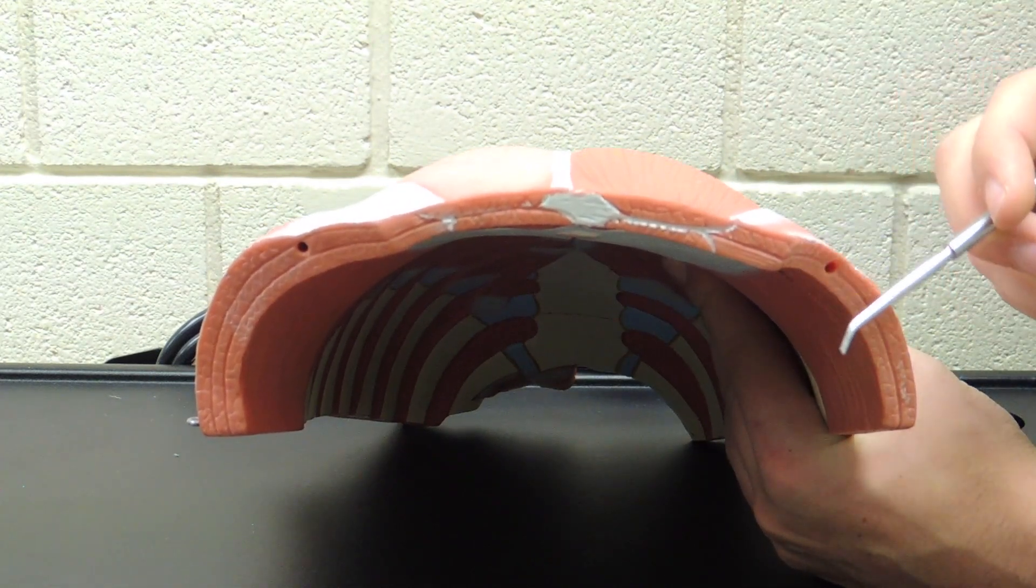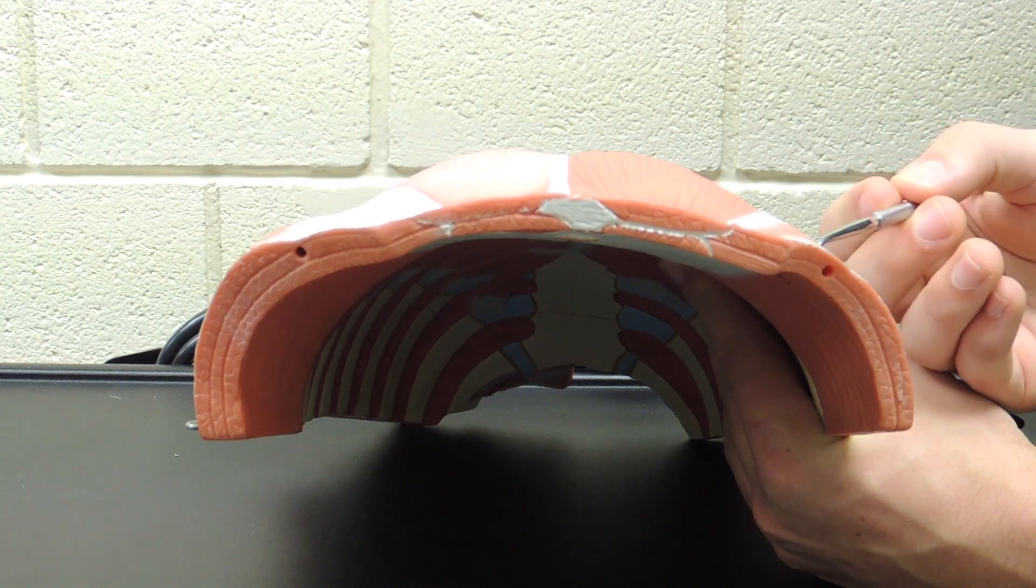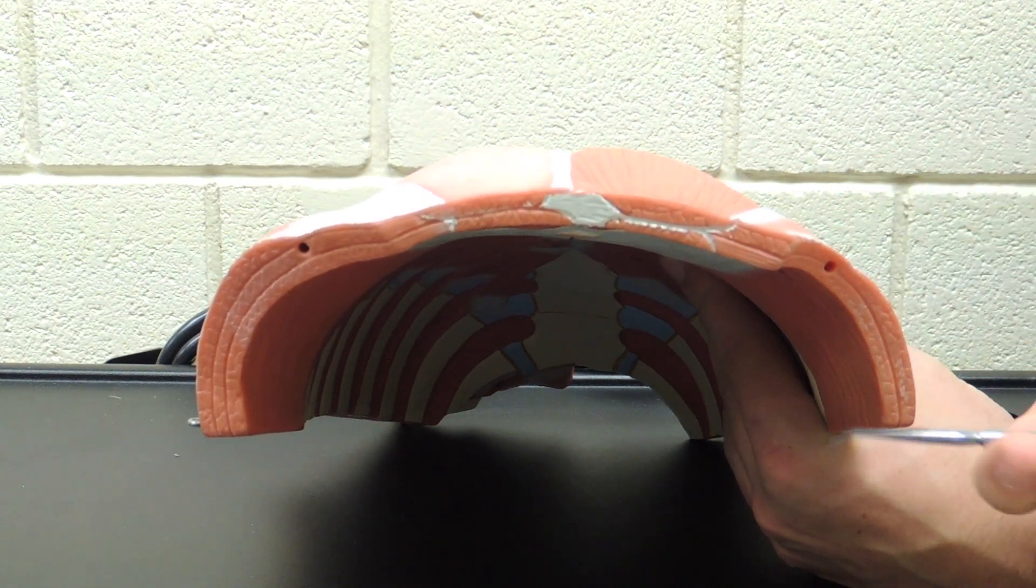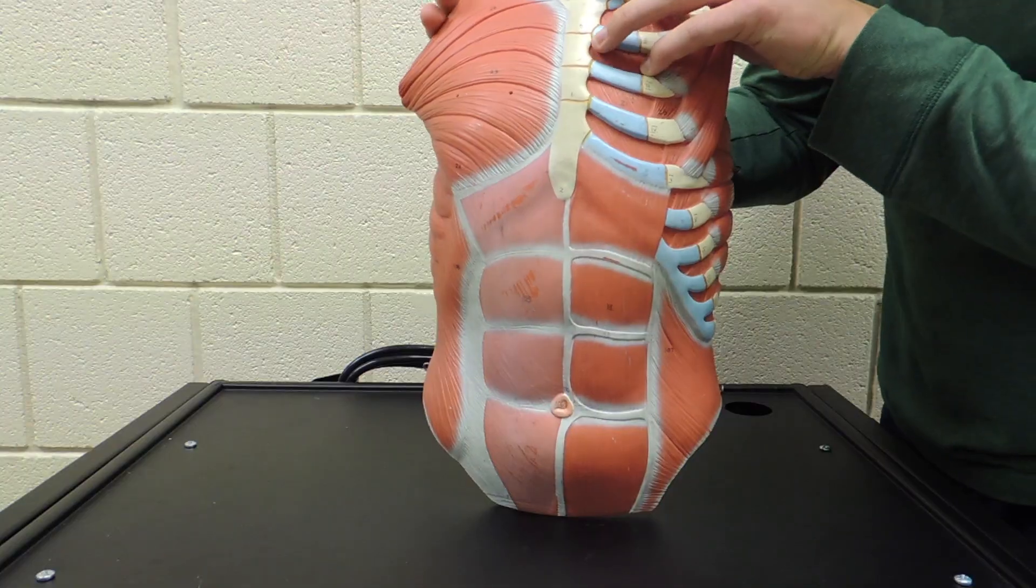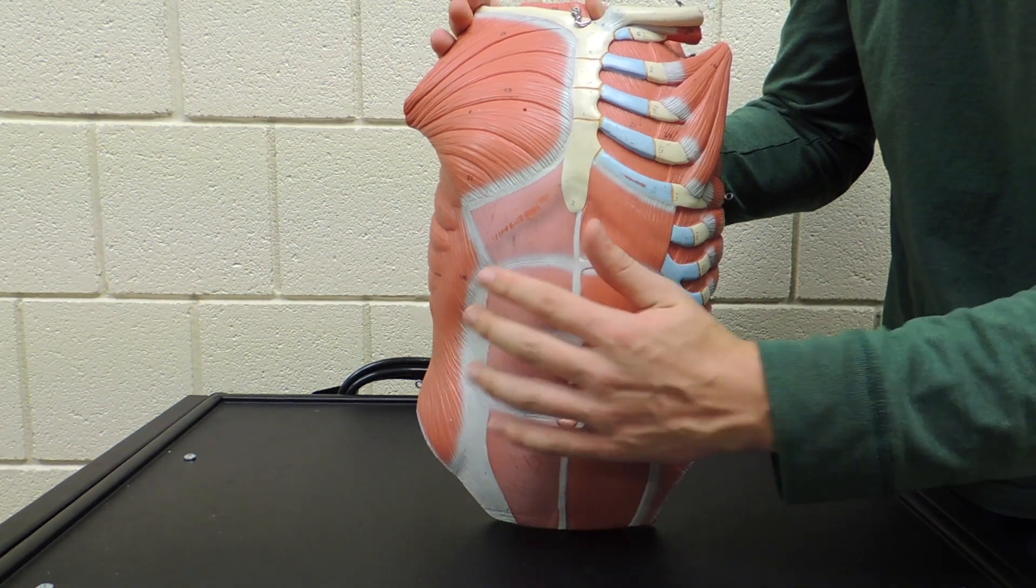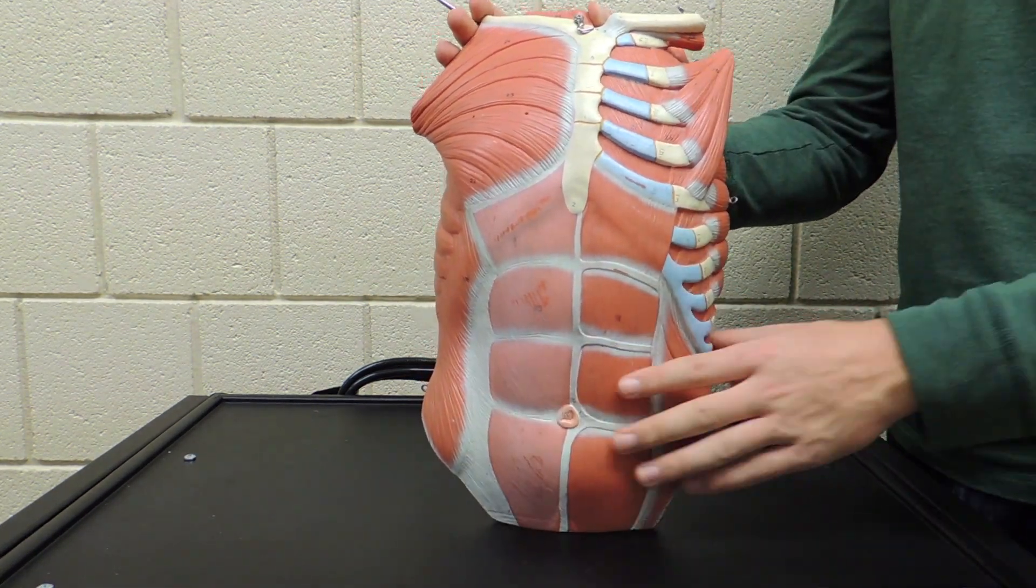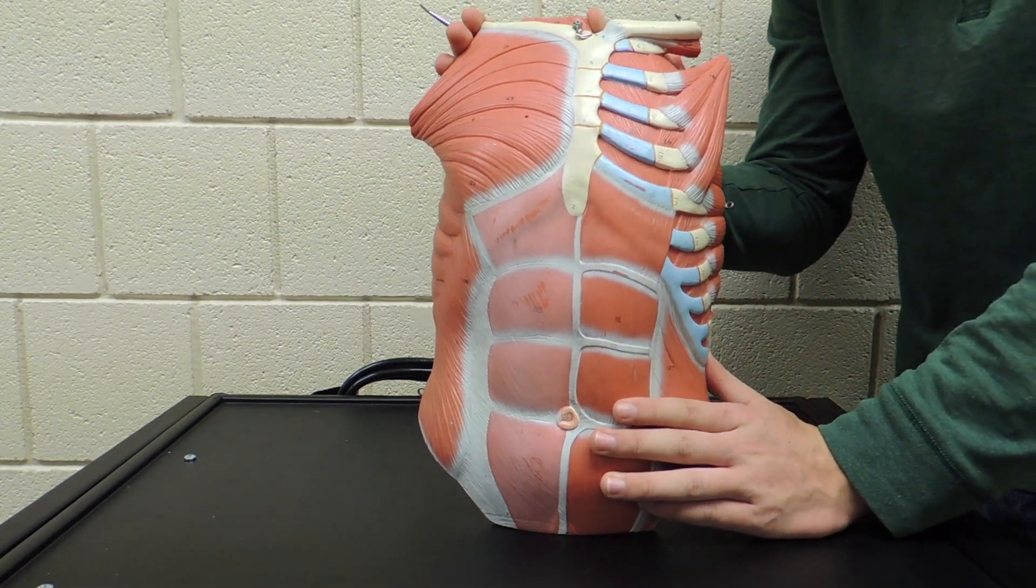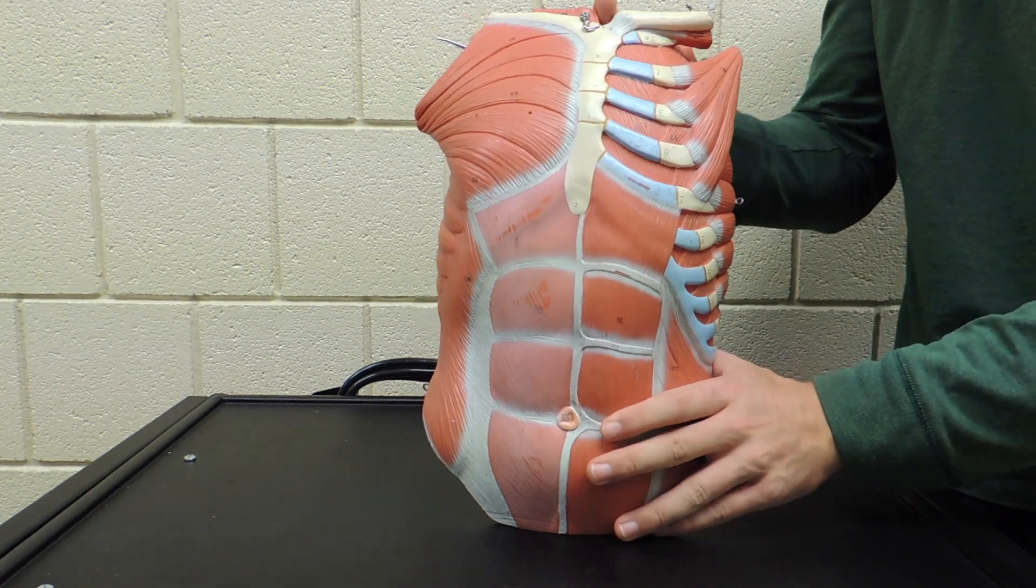If you look on the other side there's only two layers, so the most superficial layer will be your internal abdominal oblique and then the deeper layer will be your transverse abdominis. The intercostals, both internal and external, and all of the abdominals—the rectus abdominis, the two obliques, and the transverse abdominis—are all innervated by the intercostal nerves.